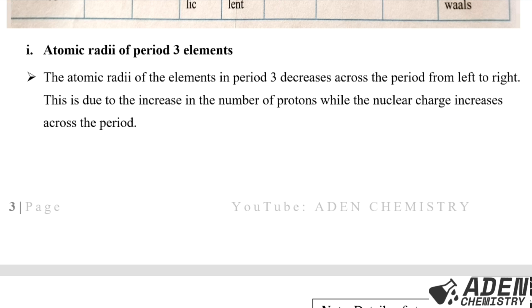The trend in atomic radius across a period is opposite to that down a group. If you remember, the atomic radius of alkali metals, alkaline earth metals, halogens, and noble gases all increased down the group. But across a period, the atomic radius decreases from left to right, because the nuclear charge increases across the period.